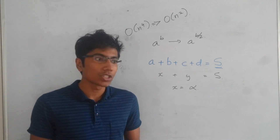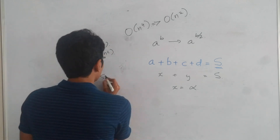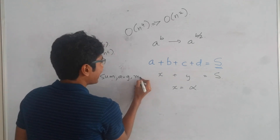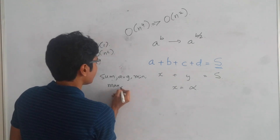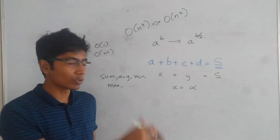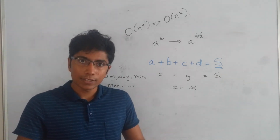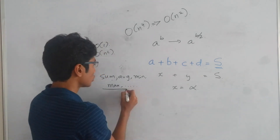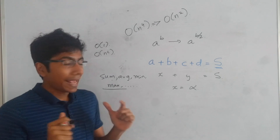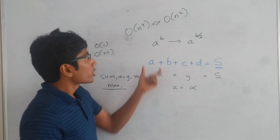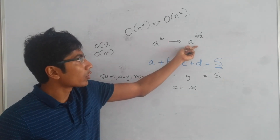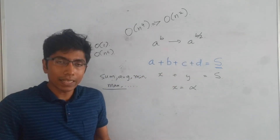Before we move to the more interesting example, let's understand what meet in the middle actually is. It's taking a larger problem, breaking it into two parts like we saw, and then trying to find a solution for those two parts efficiently. In general, meet in the middle will bring down the time complexity from some number A raised to power B to A raised to power B by 2. What you do is break it into two sets and try to merge them efficiently. This merging operation is usually done on aggregate functions — things like summing, average, finding the minimum or maximum, and so on.